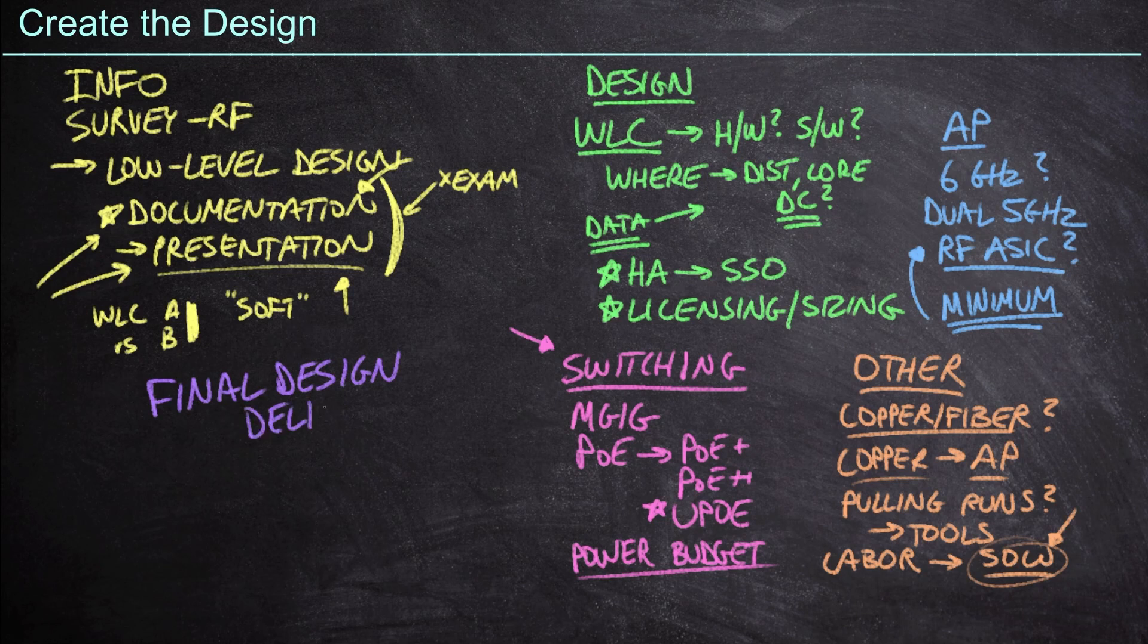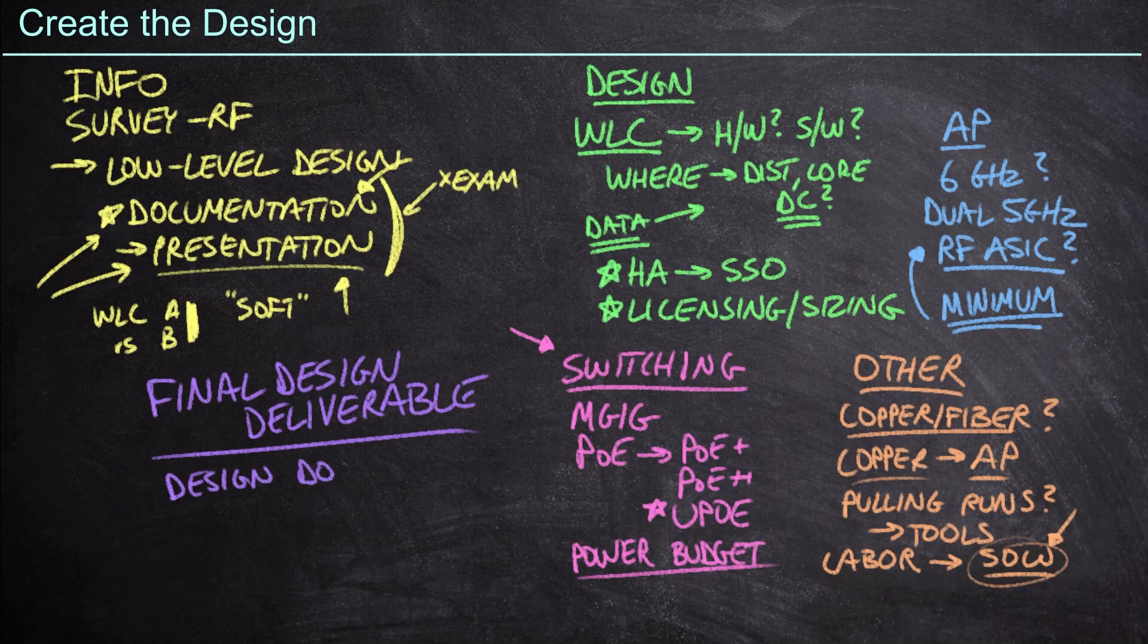And so ultimately, what we're going to do is we're going to create the final design deliverable. And so for example, we're going to have the overall design document that talks about the what we're doing and why we're doing it. We're also going to have the associated bills of materials or possibly quotes, depending on the situation. Either way is fine. We need to understand what the price is, as well as what we're getting. That's what the bill of materials would list, although the quote should list that as well.